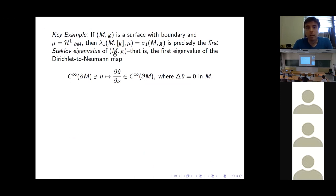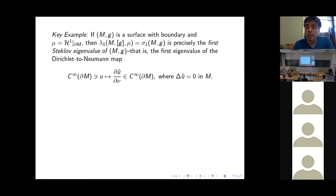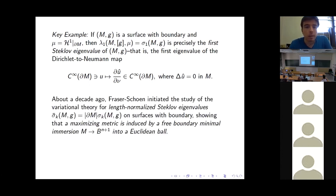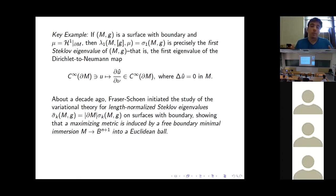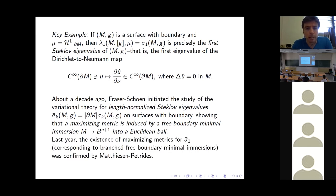The Steklov spectrum has a variational story analogous to the Laplacian one. Fraser and Schoen started the program of studying the variational theory for Steklov eigenvalues normalized by boundary length on surfaces with boundary, showing a maximizing metric is induced by a free boundary minimal immersion into some Euclidean ball — an interesting analogy with the Laplacian case where one gets minimal surfaces in spheres. Just last year, the existence of maximizing metrics for σ₁ corresponding to branched free boundary minimal immersions was confirmed by Matthias and Ndiaye.